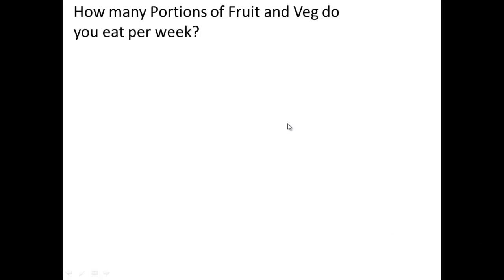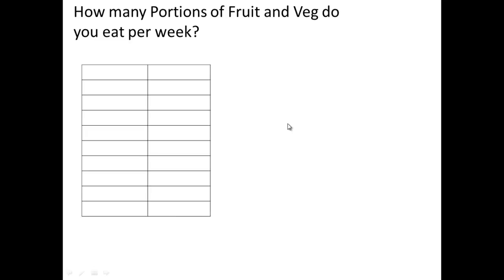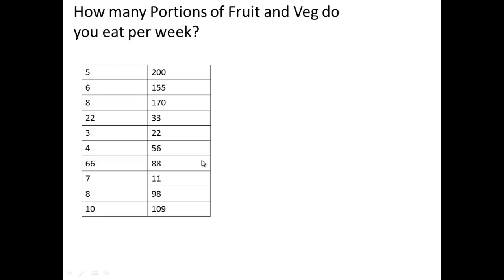I'll just click now and up should come their answers. The first person said they ate 5 portions per week, the second person said 6, the third person 8, then 22, 3, 4, 60, 6, 7, 8, 10. Going up here, the next person said they ate 200, which is quite high, then 155, and so on — here are the results from all 20 different people.